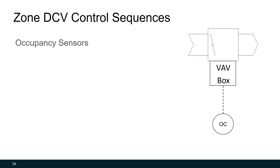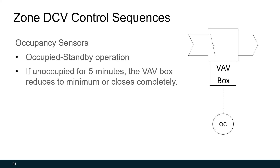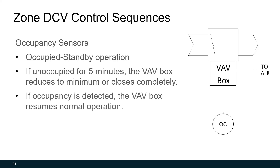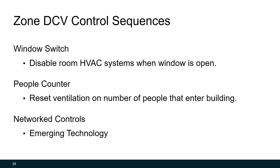It's a bit simpler with binary occupancy sensors. We can use something called occupied standby operation. This is typical for, say, an office — if the office is unoccupied for five or ten minutes, the VAV box can either reduce to minimum airflow or close completely so you're not putting any air into the space. If occupancy is then detected, the VAV box can resume normal operation. We can also use window switches to disable HVAC systems when the window is open, people counters to reset the airflow rate at the air handling unit based on the number of people entering the building, or emerging network controls technology to accurately determine occupancy using Wi-Fi networks.